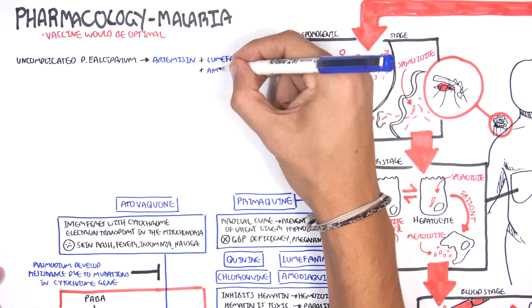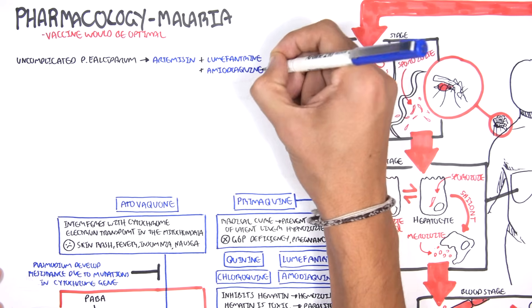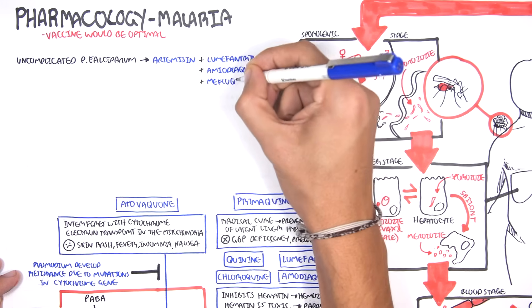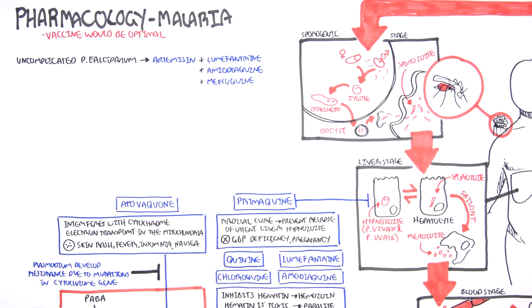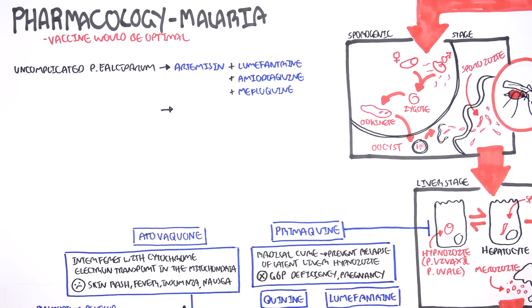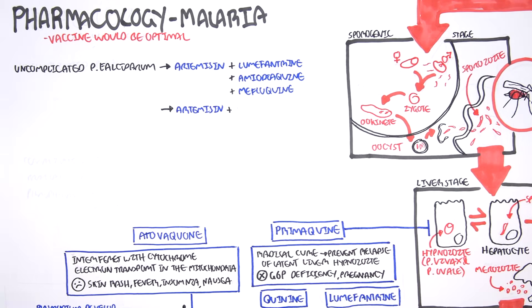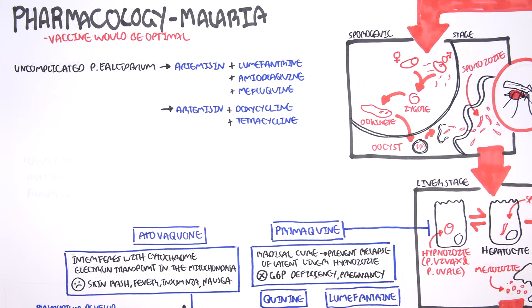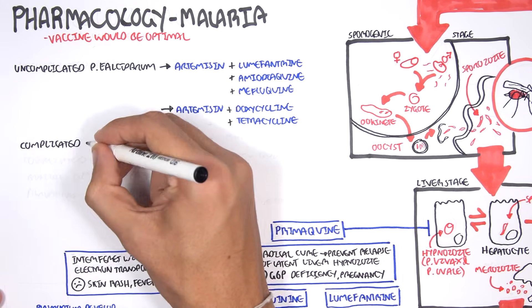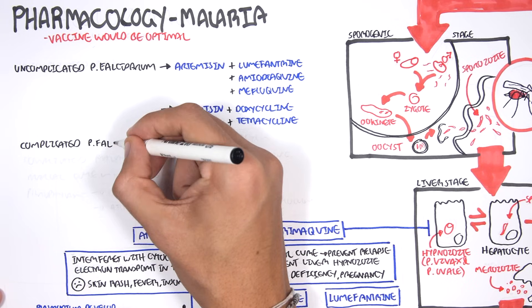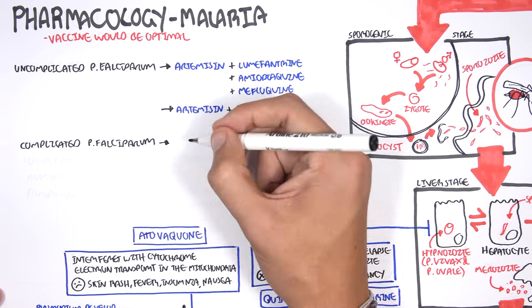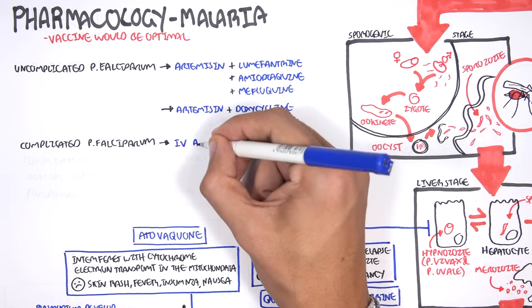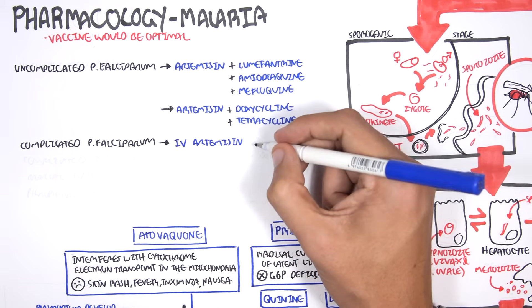Or, if not lumefantrine, we would give them another type of quinolone. Or, if we can't give them a quinolone, we would give them artemisinins plus a protein synthesis inhibitor, such as doxycycline or tetracycline. Now, for complicated P. falciparum, which is when the organs are affected, you would give them IV artemisinins or quinines.